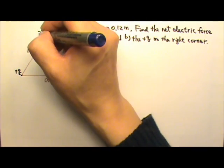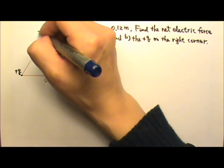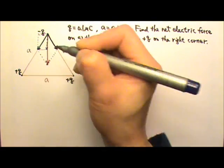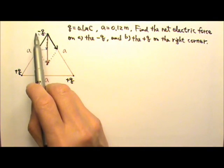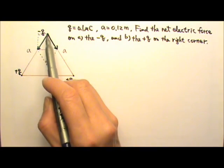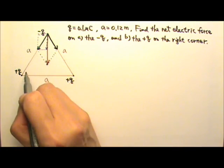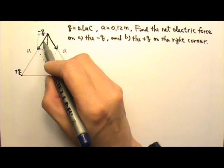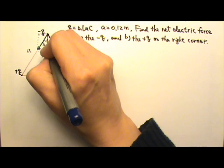We find the components by making rectangles — that's one component, and this is another component. There's no need to find the perpendicular component because it will be cancelled by the corresponding component of the other electric force. We only need to find the component going down. This is an equilateral triangle, so this angle here is 60 degrees, which means the angle over there must be 30 degrees.